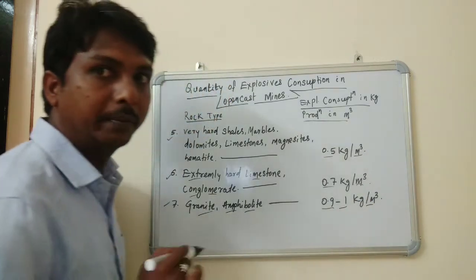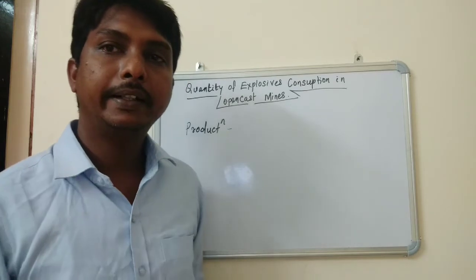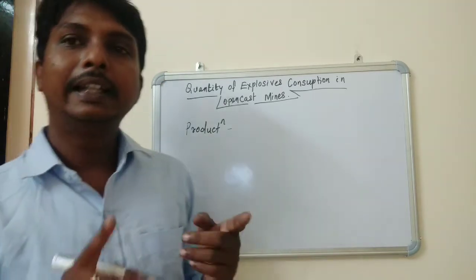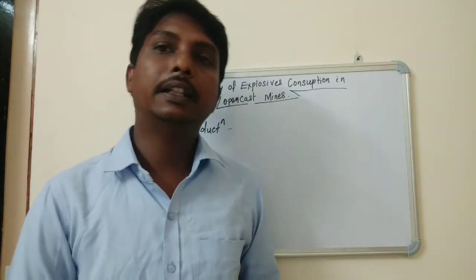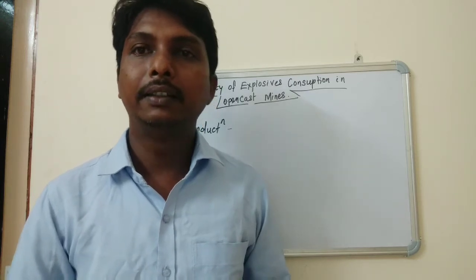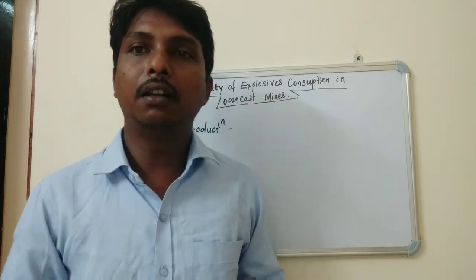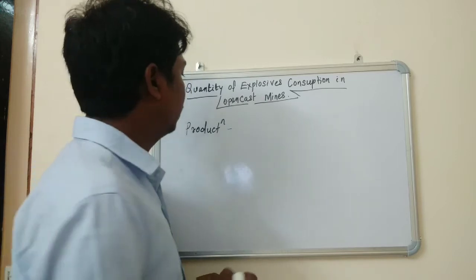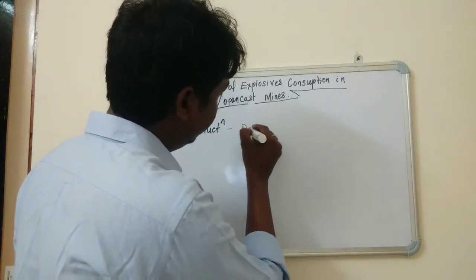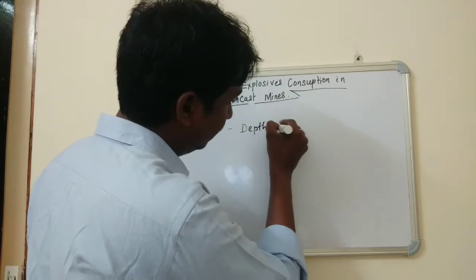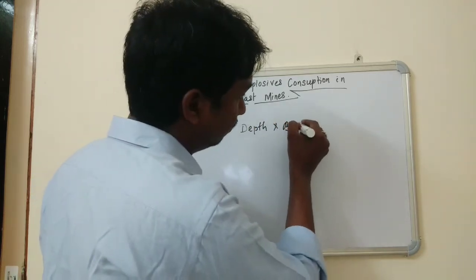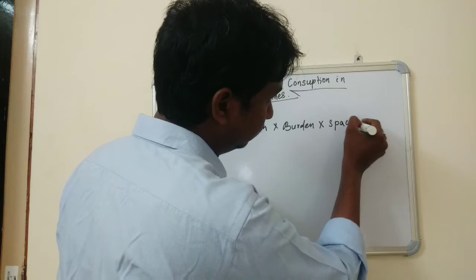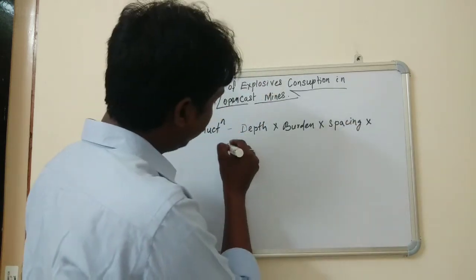So friends, in opencast mines, after a hole is blasted, we calculate how much quantity of blasted rock is produced. The formula is: depth × burden × spacing × number of holes.